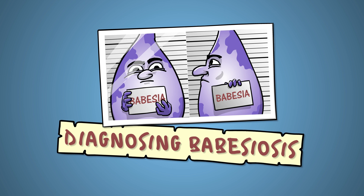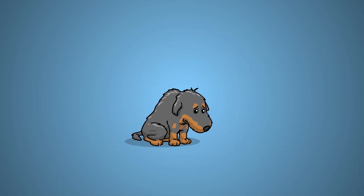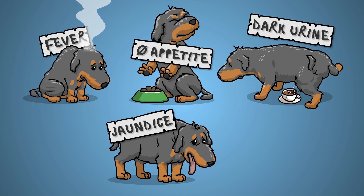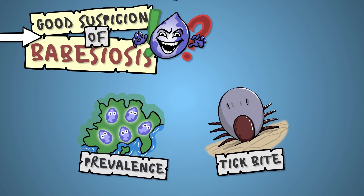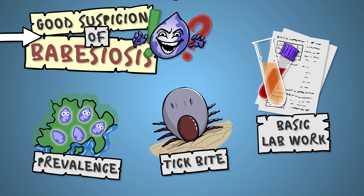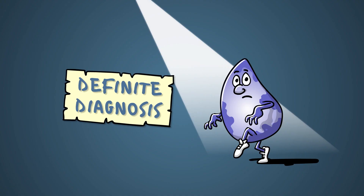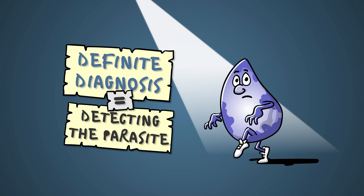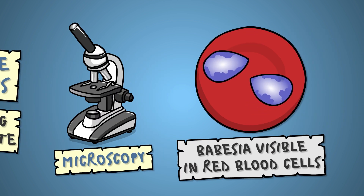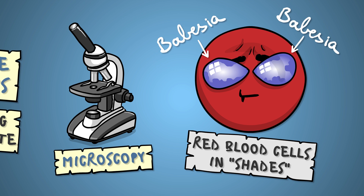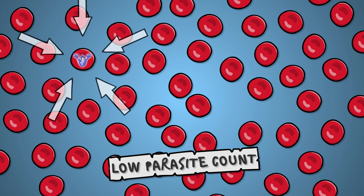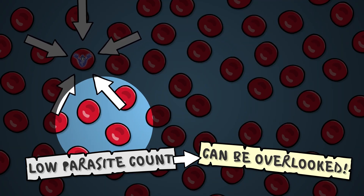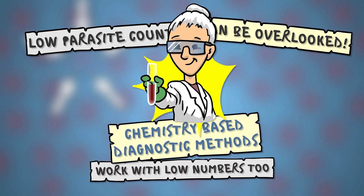So how is Babesiosis diagnosed in practice? If the dog is presented at the surgery with fever, loss of appetite, coffee-like urine, and a yellow discoloration of eye whites and gums, the veterinarian will consider Babesiosis the most likely diagnosis if the parasite is present in the area and tick bites cannot be ruled out. Routine blood work and urinalysis can also point towards Babesiosis. For a definite diagnosis, you have to confirm the presence of the parasites, which is generally done in one of two ways. Microscopy can reveal Babesia inside the red blood cells, giving the cells a cool sunglass-wearing look. Chemical detection methods are also helpful, which can pick up Babesia in the sample even in low quantities.